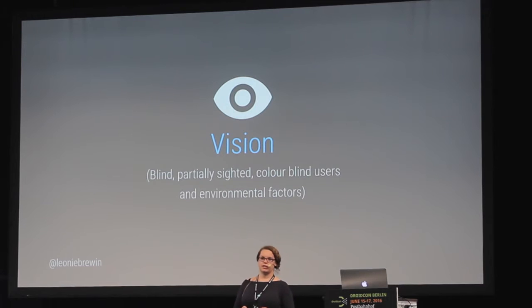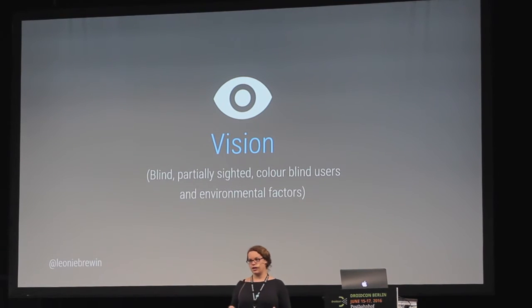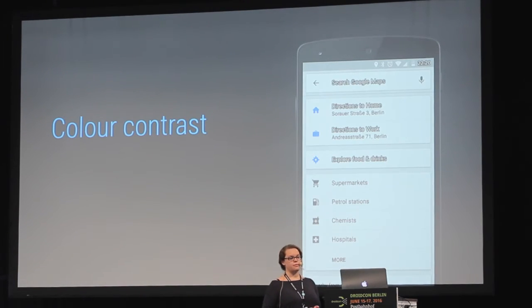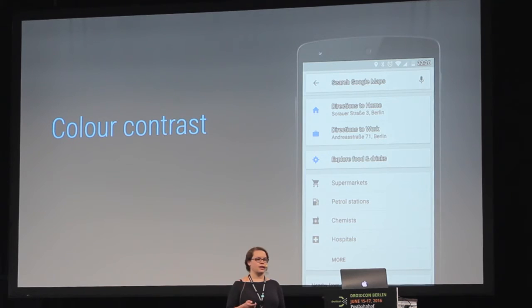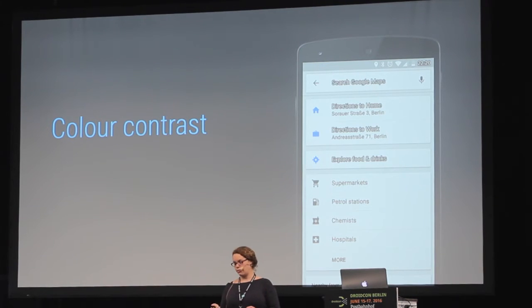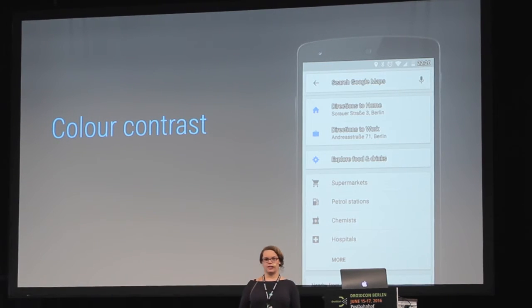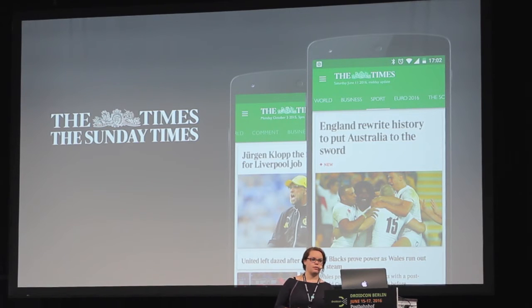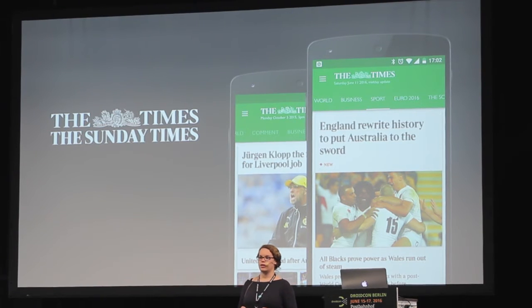Vision considerations could apply to blind, partially sighted, or colorblind users, but also environmental factors such as being outside in bright sunlight or having your screen brightness turned down. Color contrast is one of the main things to consider when designing the interface. There is a color contrast accessibility setting built into Android already — essentially it turns your text either black or white, and if it's a lighter color it might add a darker background.